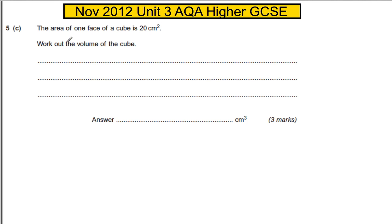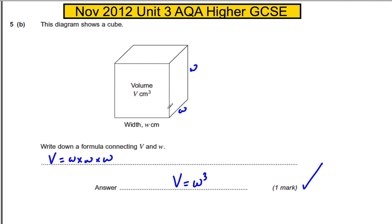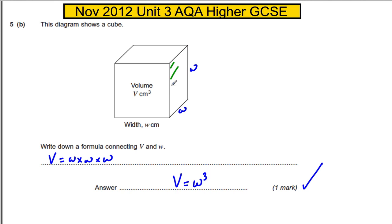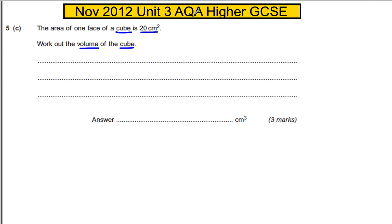For part C: the area of one face of the cube is 20 centimeters squared — hence work out the volume. Going back to this cube, any particular surface — any of these sides — must have the same area because they have the same dimensions. In particular, each face must be W squared, because it will be W times W. So the area of any face is W squared.